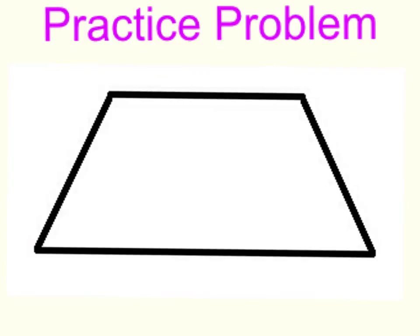Here is your practice problem for the day. Describe this shape using as many of the attributes as you can. Remember to think about the length of the sides, the possible measures of the angles, and what types of angles they might be, and whether or not any of the sides are parallel to each other. You can also give this shape a name if you know what its name might be. Make a list of the attributes in your math notebook. Good luck!